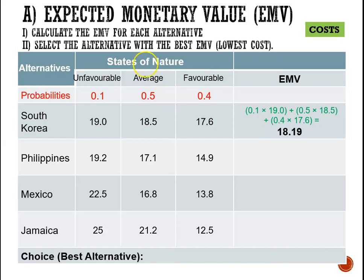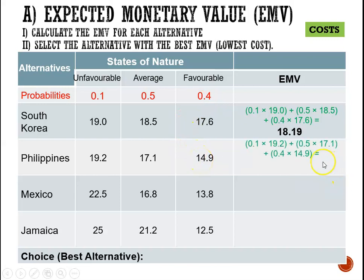For Philippines, we have 0.1 × 19.2 + 0.5 × 17.1 + 0.4 × 14.9. Adding these gives us 16.43 million.